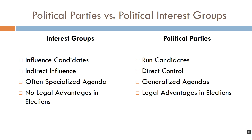Interest groups might try to influence the candidates being run by political parties, but they will not themselves run an official candidate. They do endorse candidates and fund or support candidates on a regular basis, but they do not run their own people in elections. For example, in 2016 the presidential candidates were Hillary Clinton and Donald Trump. Clinton was the Democratic Party's official candidate, selected by Democratic voters in their primary. Trump won the Republican primary and therefore was the Republican candidate. The Democratic and Republican parties are political parties — not interest groups — because they run their own candidates.